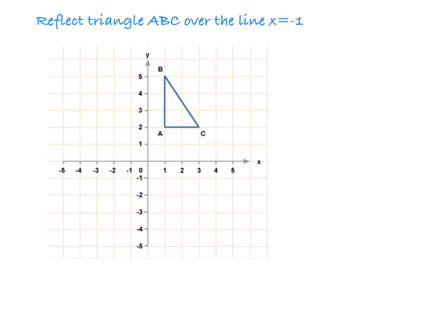Example 3 says reflect triangle ABC over the line x equals negative 1. So now what we're going to do is we're just going to draw our line on here, x equals negative 1. This is telling us that all of our x coordinates are going to be negative 1. So no matter what our y is, our x is negative 1. So this is the line that we are going to reflect our image or our triangle over.